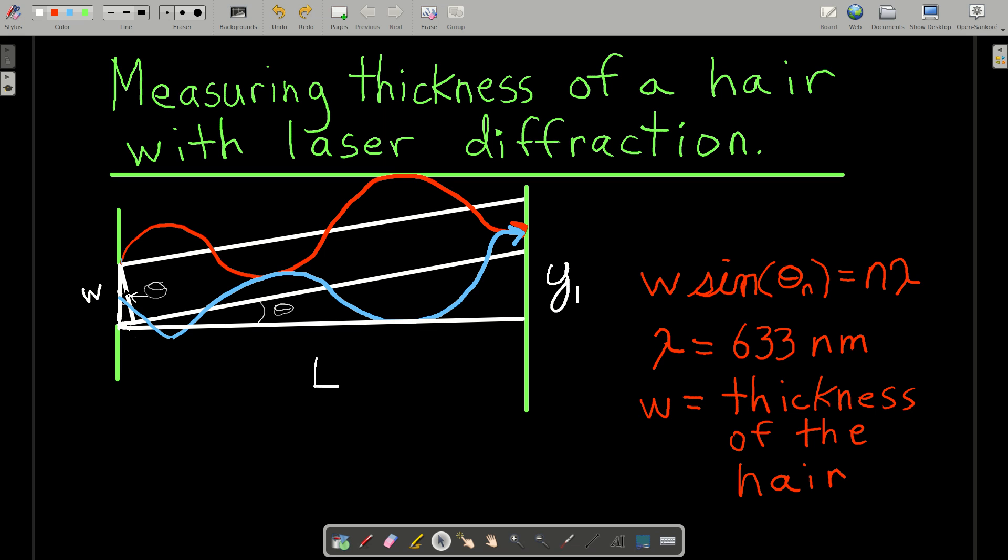For destructive interference, the peaks and the troughs line up, and the crests line up. This is what two waves would look like if they were undergoing destructive interference.